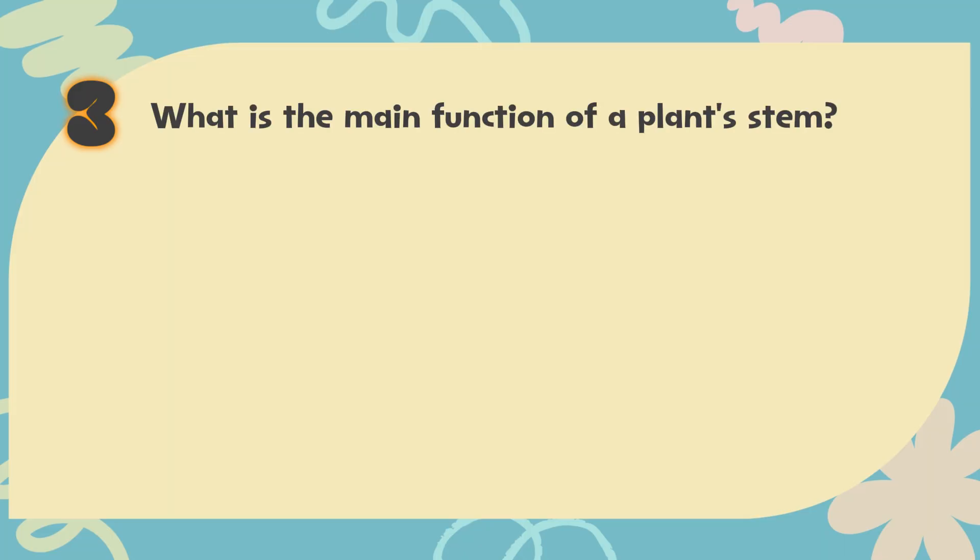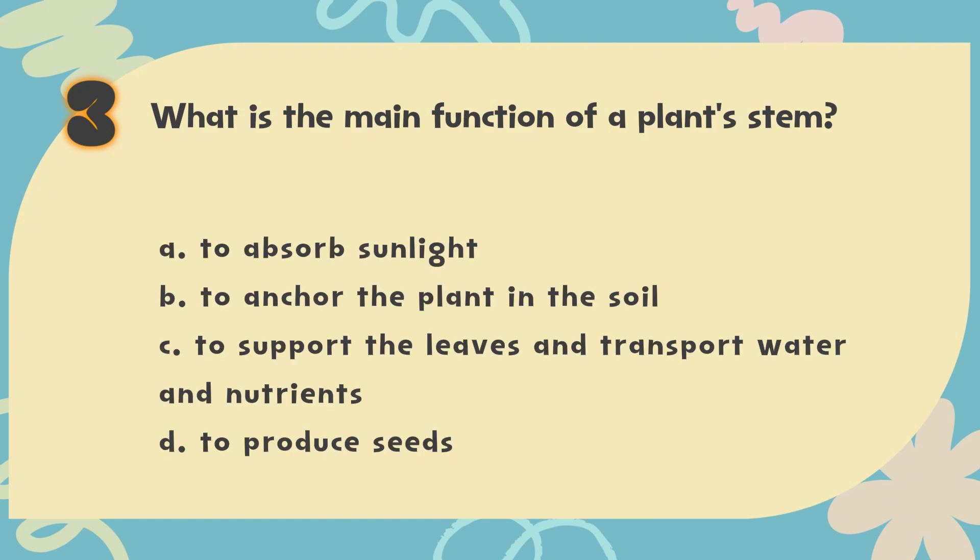Number 3. What is the main function of a plant stem? The choices are: A. To absorb sunlight, B. To anchor the plant in the soil, C. To support the leaves and transport water and nutrients, D. To produce seeds.